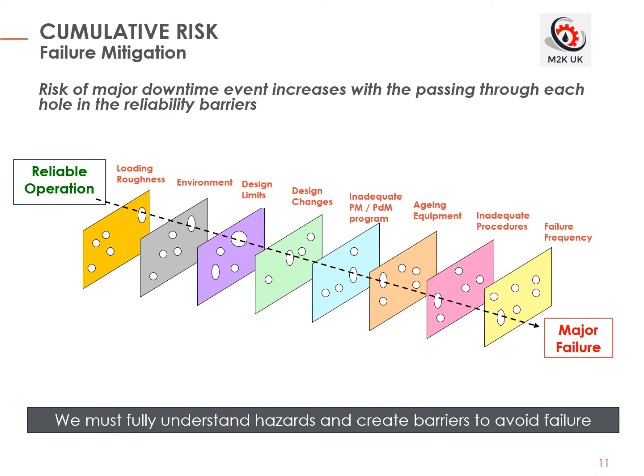You may recognise this illustration as a form of hardware barrier analysis or Swiss cheese model, and this shows how it applies to reliability. This cumulative risk visualisation model is a particularly good way to demonstrate to management how the risk of having a major failure is increasing as we pass through each barrier. The further we get through all these barriers, the severity and consequence of a potential failure also increases. If all the holes align, it could mean disaster — I do not use that term lightly. How many of these apply to your facility?